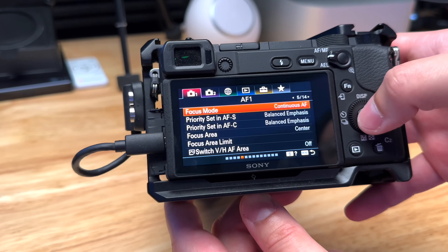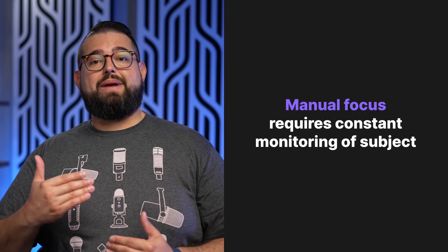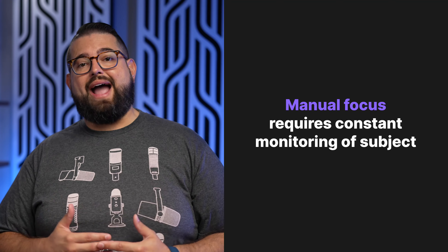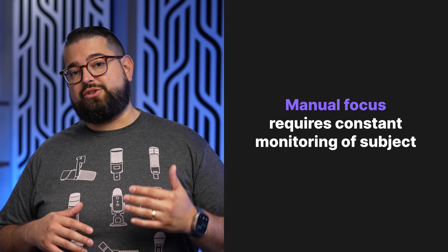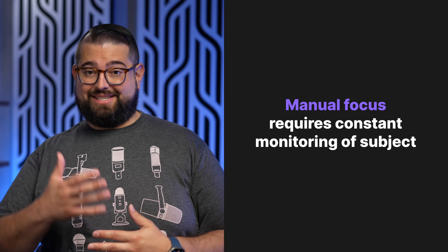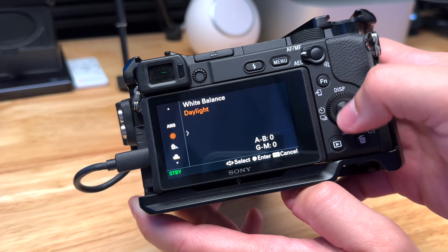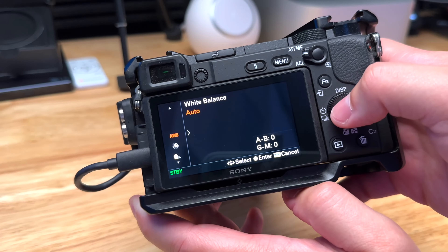On manual focus, make sure your subject is crystal clear and adjust manually. Try to have a large preview monitor so you can double check they're in focus, and remain aware if they move forward or backward in the frame — because on manual focus, if they move too far, they'll go out of focus. If you're struggling with this, have your subject seated and tell them to stay in the chair. You can even mark it on the floor so your manual focus setting stays steady throughout the interview.